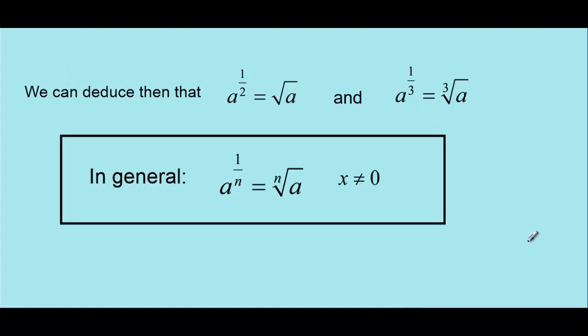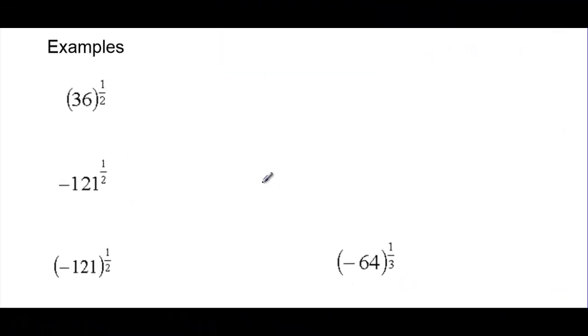Here's the general rule. Any time we have the exponent 1/2, that means it's a square root. Any time we have an exponent of 1/3, that means it's a cube root. In general, any exponent 1 over n, where n is just some number, means we're taking the nth root of the base. The denominator n can't equal 0. For example, 36 to the exponent 1/2 is the same as the square root of 36, which we know is 6.